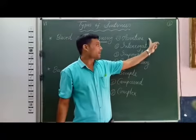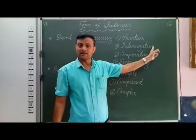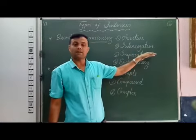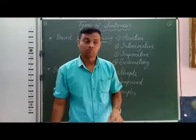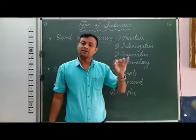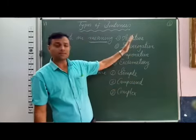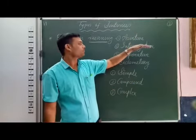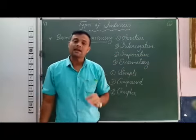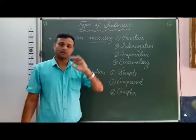At the end of an assertive sentence we use a full stop. At the end of an interrogative sentence we use a question mark. At the end of an imperative sentence we use a full stop. At the end of an exclamatory sentence we use an exclamation mark. So these four — assertive, interrogative, imperative, and exclamatory — are types of sentences based on meaning.